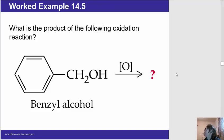So let's look at worked example 14.5. What is the product of the following oxidation reaction where we're looking at benzyl alcohol? So we have an aromatic ring bonded to a carbon. That carbon is bonded to two hydrogens and a hydroxyl for the alcohol functionality. So pause the video and figure out what the product should be.